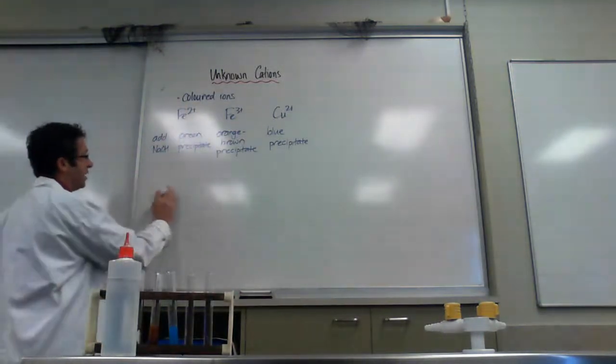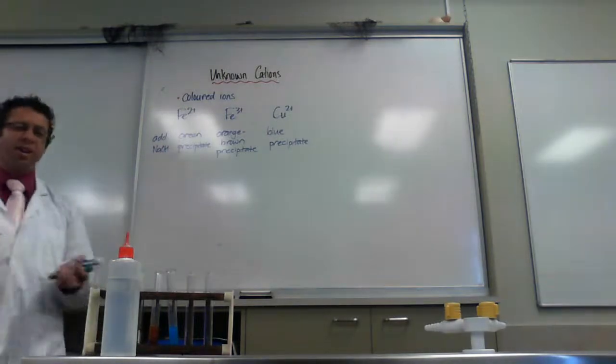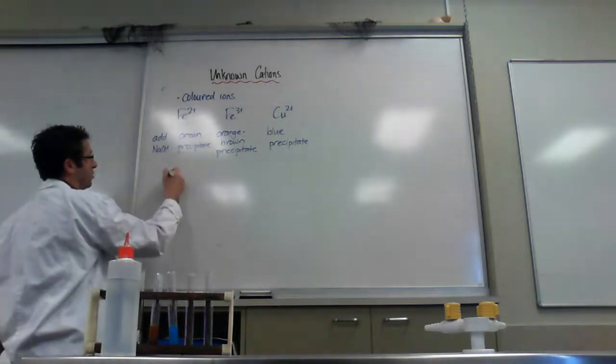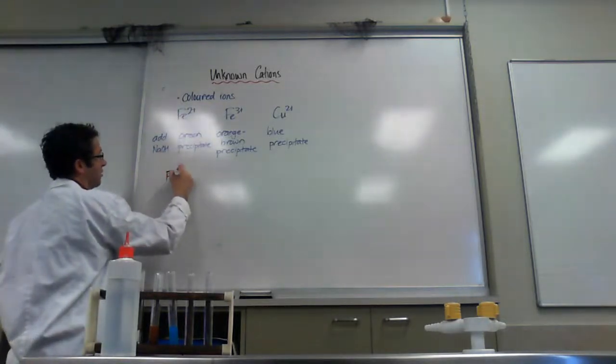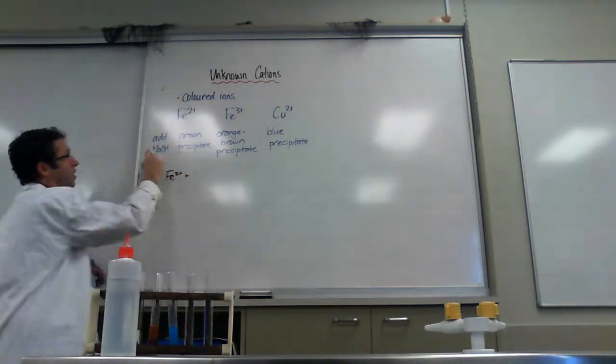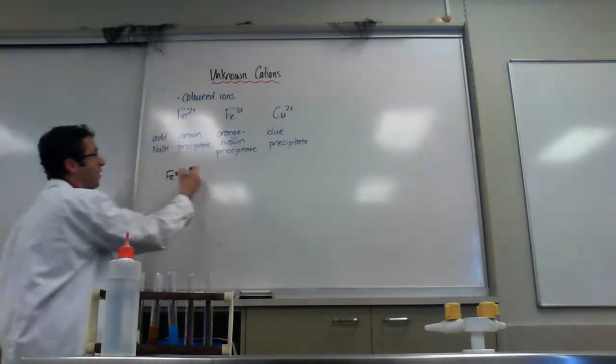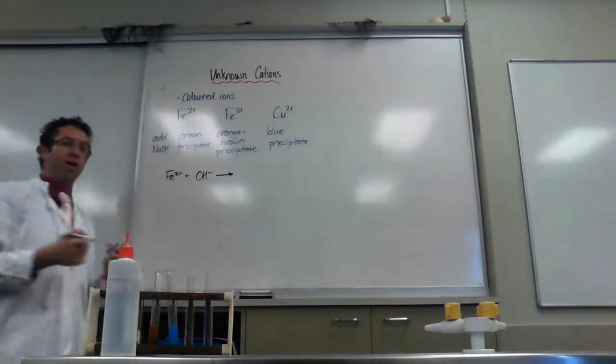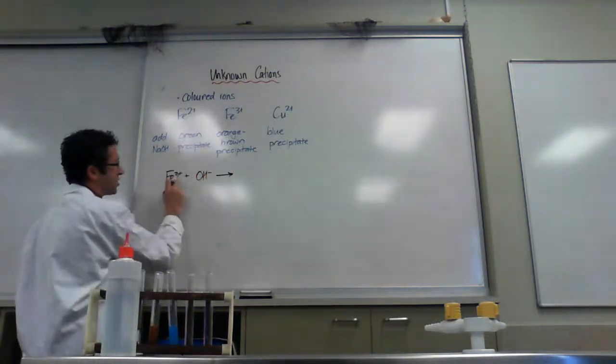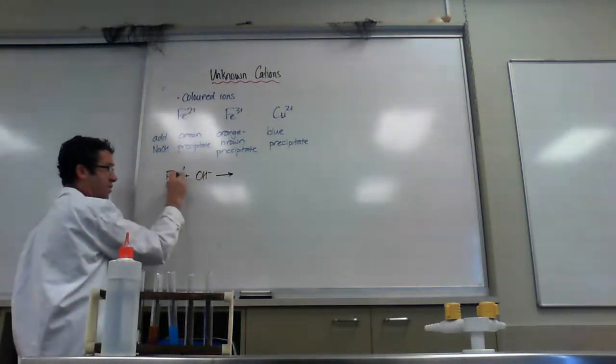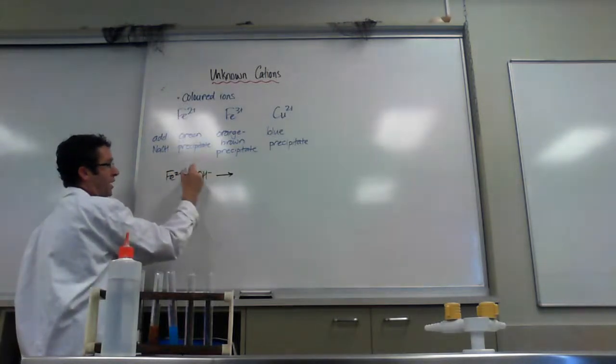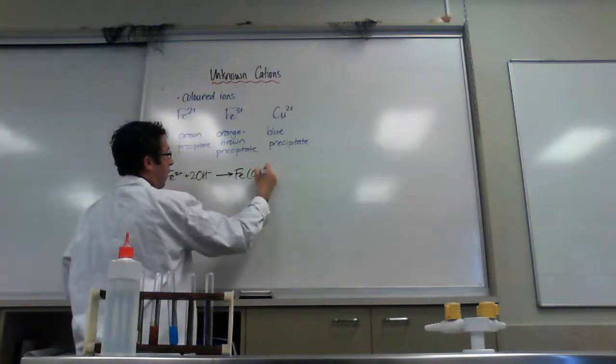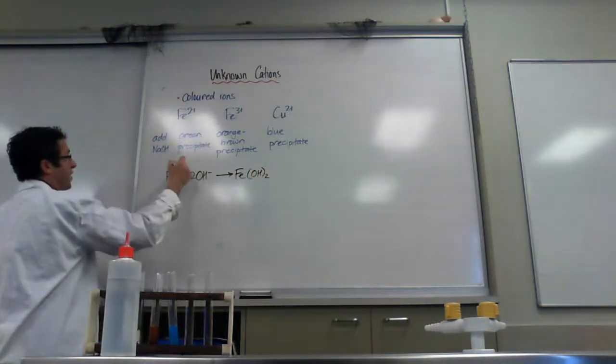So the first one here, it doesn't matter what it is. I think I grabbed Iron 2 sulphate, but it doesn't actually matter which Iron 2 it is. The rest of it is a spectator. So I'm going to write Fe2+ plus NaOH, sodium hydroxide. It's only the hydroxide ions that matter. And it's going to make Iron 2 hydroxide. So because there's a 2 plus charge here, I need two one negatives to balance those out. So it becomes Fe(OH)2.